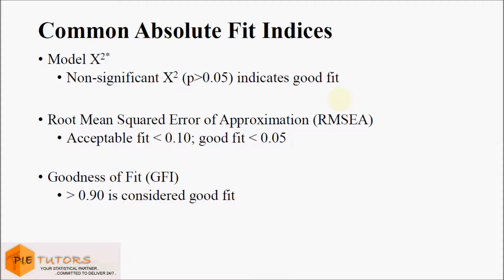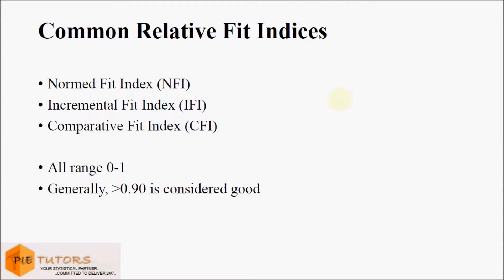The goodness of fit index (GFI) values greater than 0.9 are considered a good fit. It is required to look at all fit indices together rather than each value independently. The second class of fit indices are the relative fit indices, which compare the theoretical model to a baseline model to test if the specified model is better than a model with no relationships. Commonly used relative fit indices are the normed fit index (NFI), incremental fit index (IFI), and comparative fit index (CFI). For all these indices, values range between 0 and 1 and we generally require values greater than 0.9.